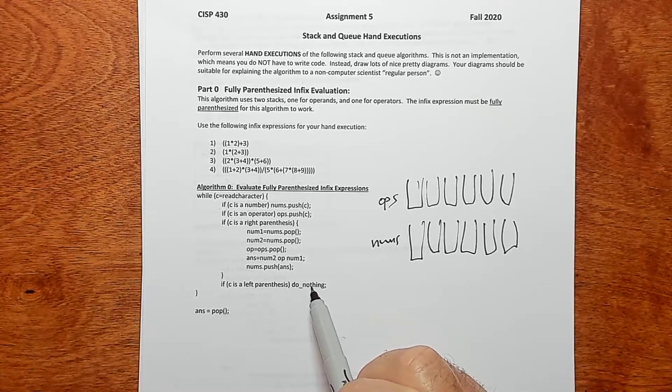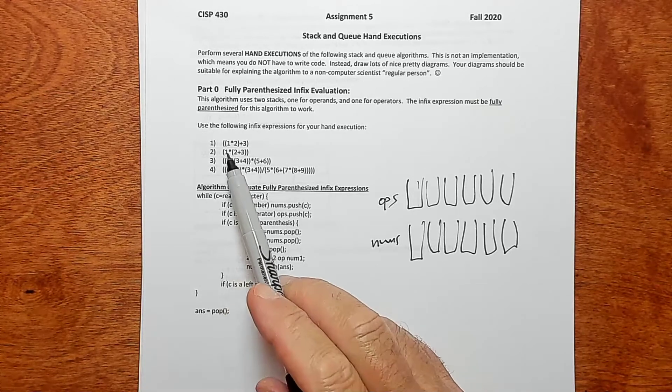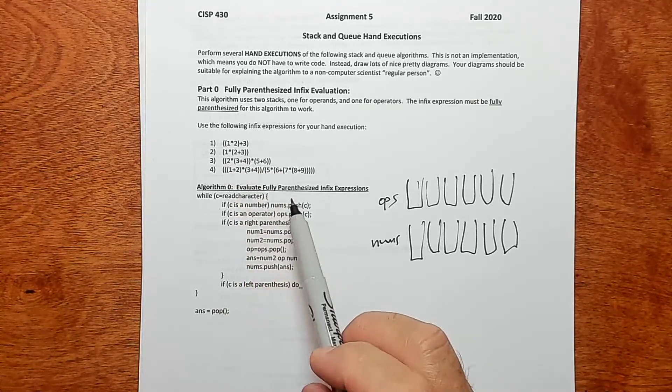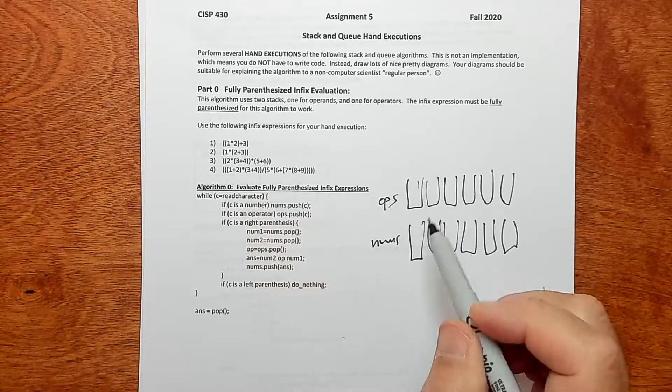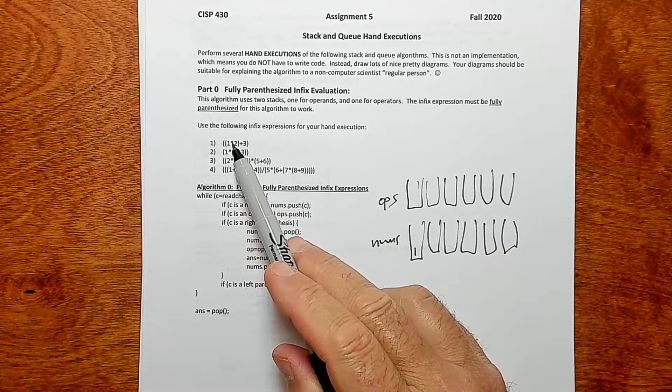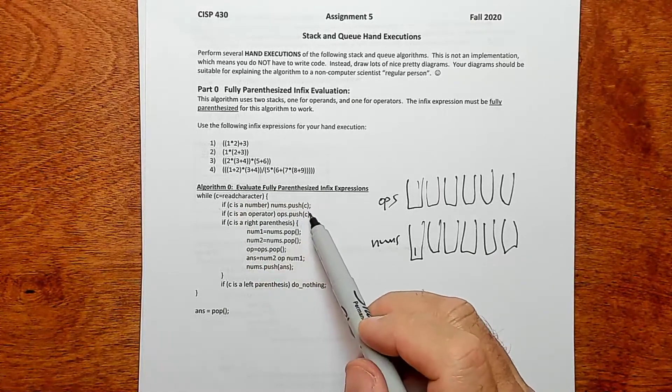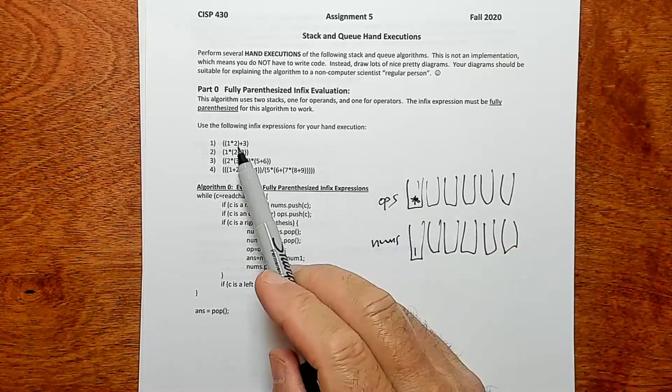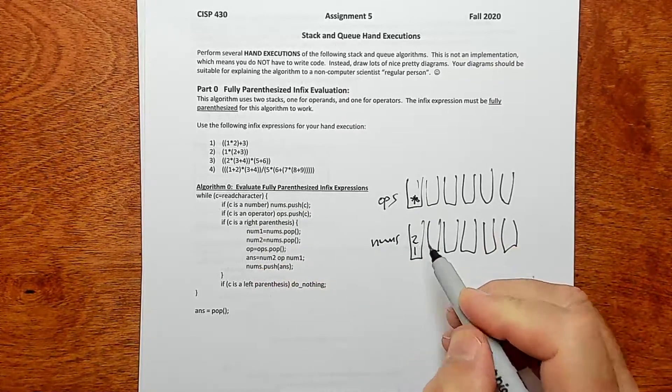Left parentheses, do nothing. Then you get another left parentheses, you're going to do nothing. Then you're going to get a one. That's a num, a number. So you're going to push it on nums. Then you'll be looking at the multiply here. And that's an operator, so we push it onto the ops. Then we get a two, and that's a number. So we push it on there.